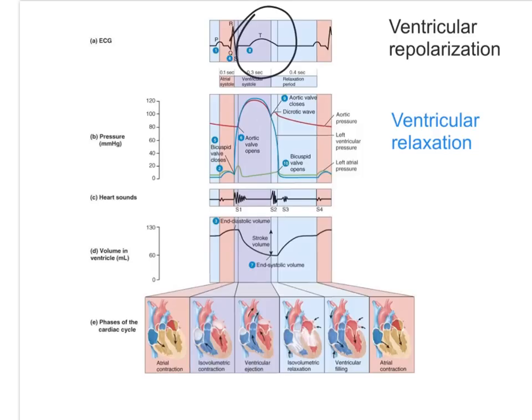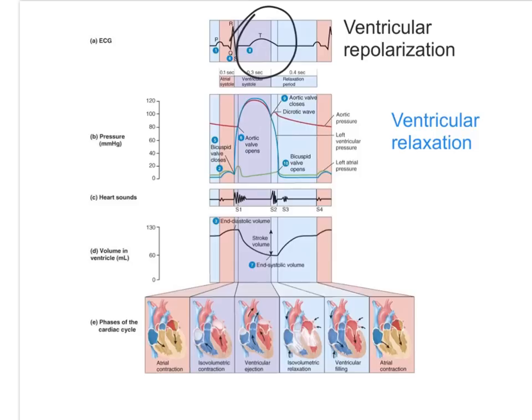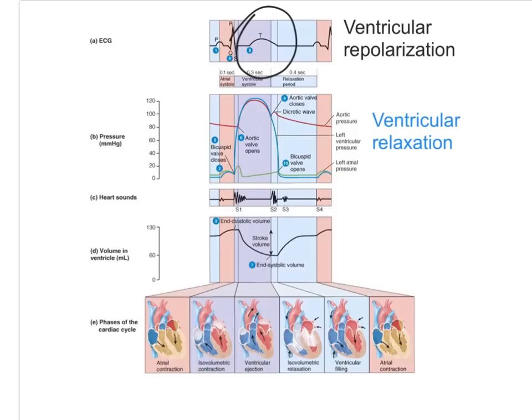The next wave in the ECG is the T wave, which represents ventricular repolarization. This is going to be followed by ventricular relaxation, and you will note that the ventricular pressure is going to start to decrease as the ventricle undergoes diastole.